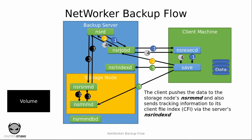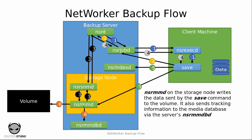While sending the backup data to the NSR MMD, save is also generating client file index data. Client file index data is the catalog — the information regarding what files are being backed up by this particular operation. That information is sent to NSR indexd, which in turn stores it into the CFI, or the client file index database.